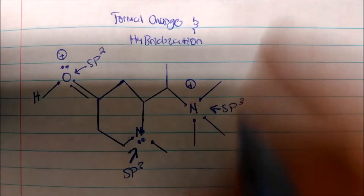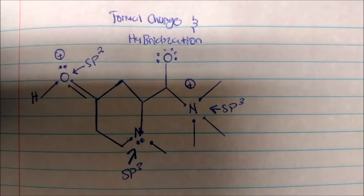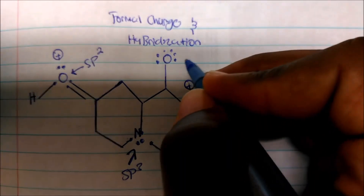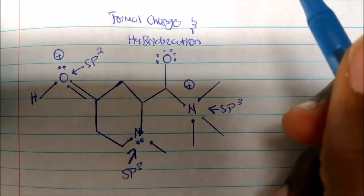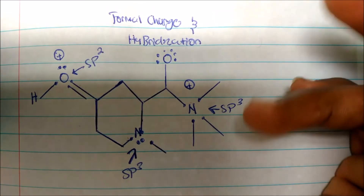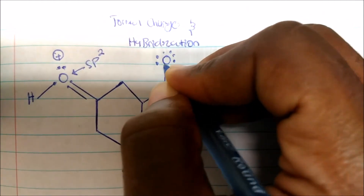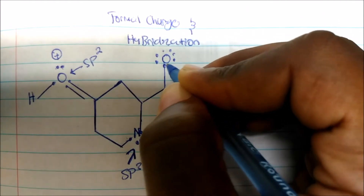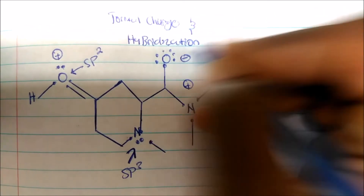Just for practice, let's put an oxygen here and calculate its formal charge. Oxygen's valence electron number is six. How many electrons are around this oxygen? One, two, three, four, five, six, seven — you have seven. So six minus seven gives a minus one charge.